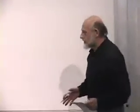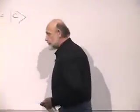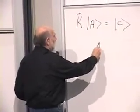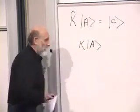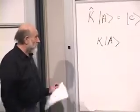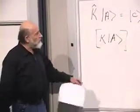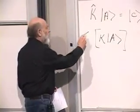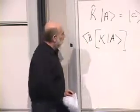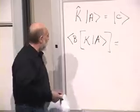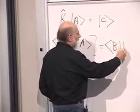That, together with the idea of the dual vector space and the notion of inner product, allows us to define what are called matrix elements of operators. Matrix elements of operators are numbers — a number for each pair of states that you can write down. Let the operator act on A, it gives you another vector. Take the inner product of that with another vector B. That is usually simplified in notation to B, K, A.